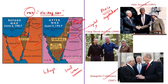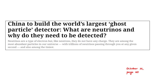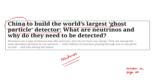Now let us move to the next article discussion. This article talks about China building an enormous telescope to detect ghost particles. Neutrinos are called ghost particles, and this telescope will be the largest ever telescope to detect neutrinos. Why are neutrinos called ghost particles? We shall see in our discussion.